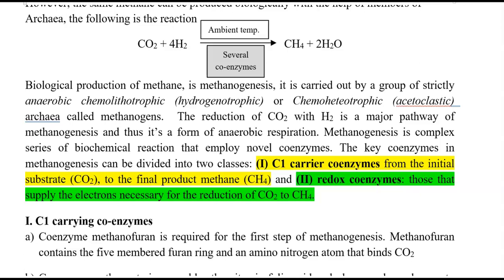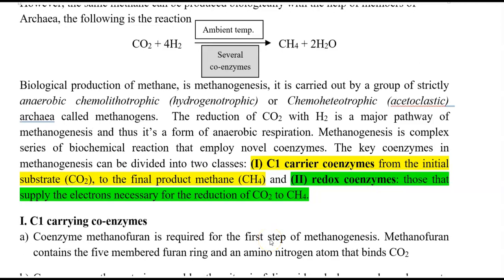The reduction of carbon dioxide with hydrogen is a major pathway of methanogenesis and is a form of anaerobic respiration. The pathway in which methane is formed is referred to as the acetyl-CoA pathway. Methanogenesis comprises various biochemical reactions employing different coenzymes. The key coenzymes are divided into two groups: C1 carrier coenzymes, involved in the initial steps carrying carbon dioxide through to methane, and redox coenzymes, which supply the electrons required for reduction of carbon dioxide into methane.